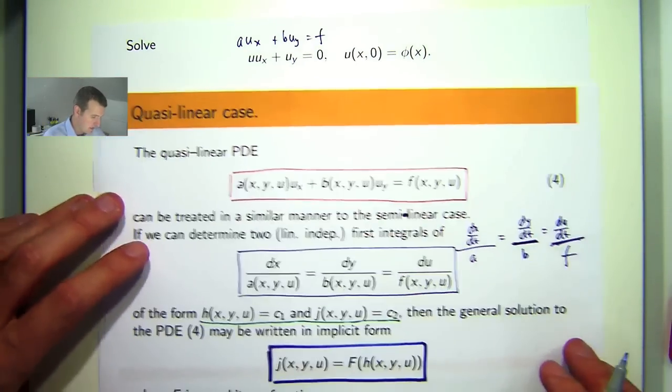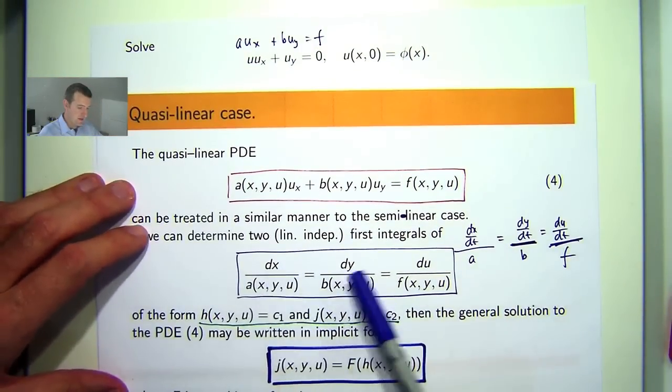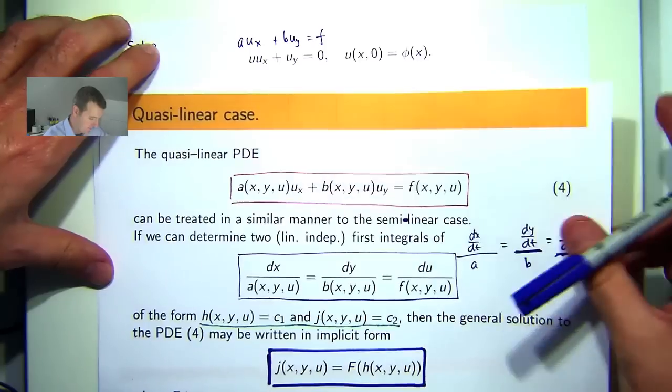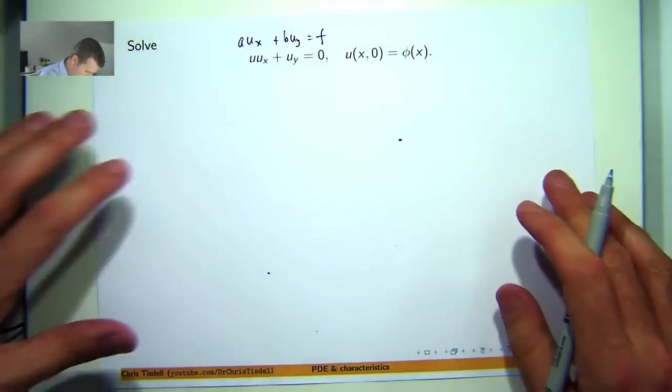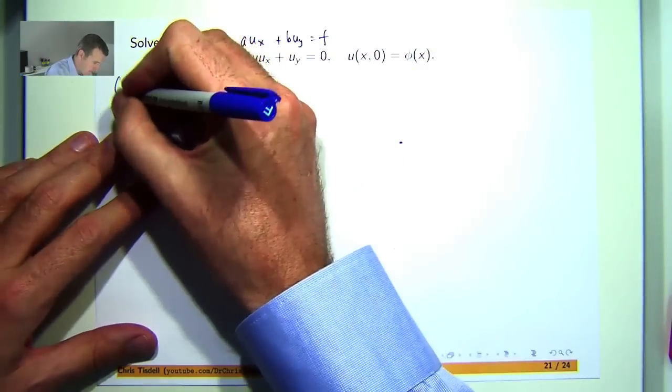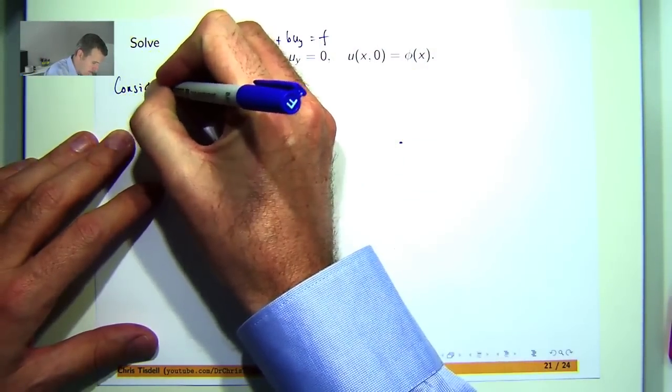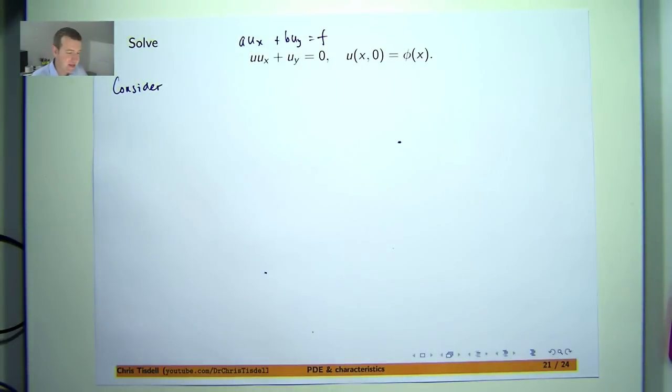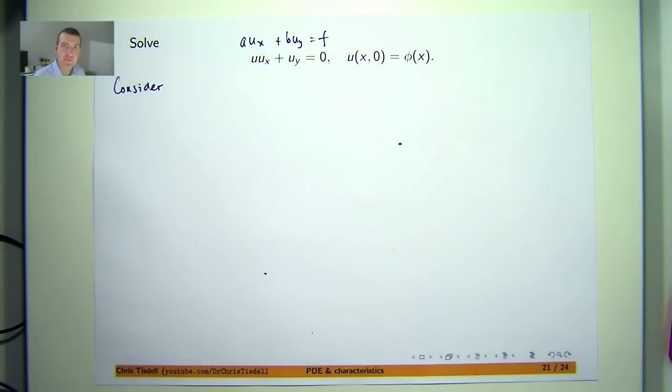So first of all let's write down this system here with our particular a, b, and f. Before I get to that though, why is this an interesting problem? This is a quasi-linear PDE known as Burger's equation and it comes from fluid mechanics.